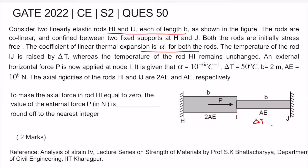The temperature of rod IJ is increased by delta T, whereas the temperature of rod HI remains unchanged. An external horizontal force P is applied at node I. It is given that alpha is 10 to the power minus 6 per degree Celsius, delta T is 50 degrees Celsius, b is 2 meters, and AE is 10 to the power 6 Newton. The axial rigidities of rods IJ and HI are AE and 2AE respectively. We need to find the value of external force P to make the axial force in rod HI equal to zero.